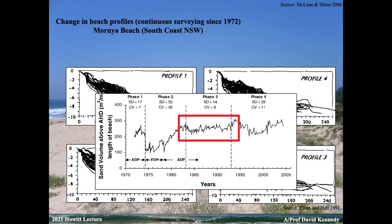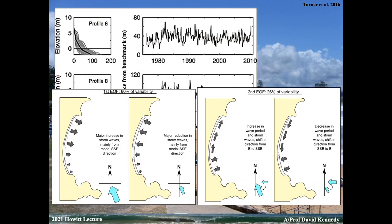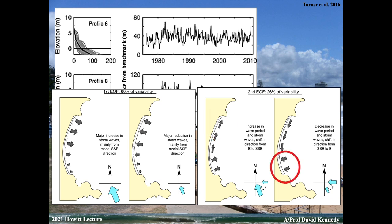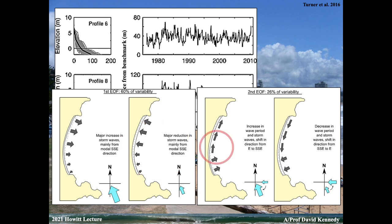Our beaches are moving. Along Collaroy and North Narrabeen, about 60% — just under two-thirds — of variability is actually an on-offshore movement: that classic equilibrium model, flattening the beach out. But about a quarter of it is actually longshore variability as well — quite a seasonal movement related to the passage of East Coast Lows down the east Australian coast. The sand that's up here affects what's happening down the beach, and the sand offshore affects what's happening onshore.